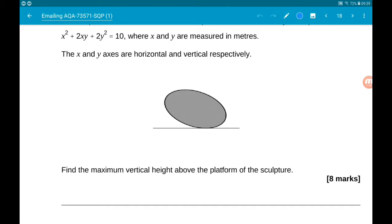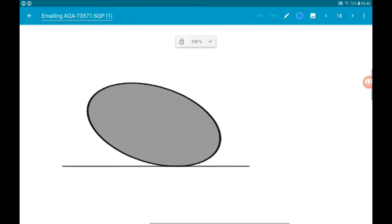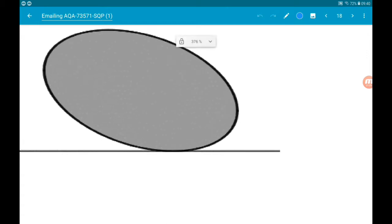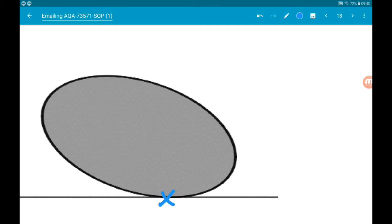Right, so it's important here to realize that the platform is not the x-axis. So if we want to find the maximum height of the sculpture above the platform, we need to find the height between this point and this point.